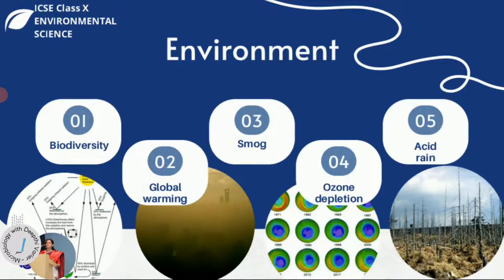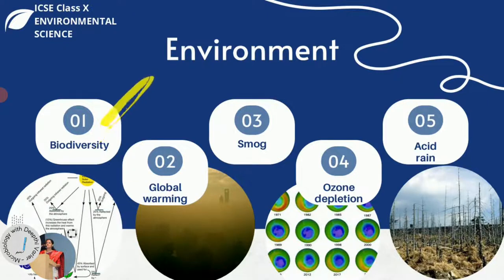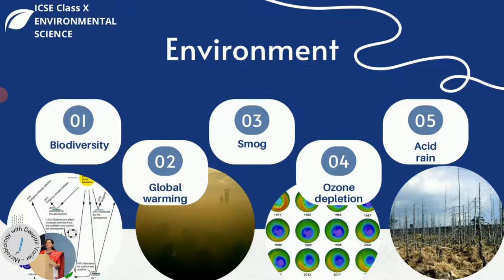Apart from health, air pollution has a lot of effects on the environment as well. Our biodiversity gets affected. There is global warming occurring due to greenhouse gases. Greenhouse gases are normally present in our environment and help keep the atmosphere warm, but the problem is there is too much of it, making the heat very high — that is what we call global warming, which leads to climate change.